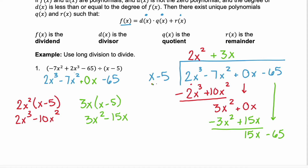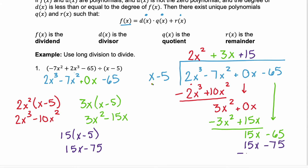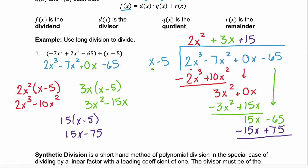Now we're looking at that first term of our divisor, the x. We have to multiply it by what to get 15x? We need to multiply by a positive 15. 15 times x minus 5 is 15x minus 75. We write that down here. Remember, we are subtracting these two terms. Subtract a positive 15x, subtract a negative 75, and that becomes a positive 75. The 15x's cancel out. Negative 65 plus 75 is 10. We have a remainder of 10, because there's no longer an x variable left. So we add our remainder, which is 10 over our divisor x minus 5.